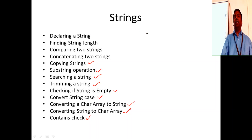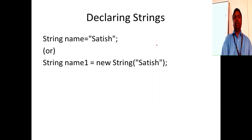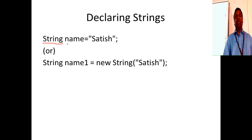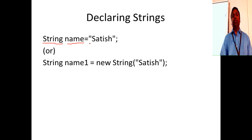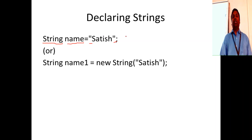A string is a sequence of characters put together in double quotes in Java. We'll see how to use all the methods to handle strings. The straightforward way to declare a string is to use the String class - capital S - give a variable name, and then provide your value in double quotes. This is called a string literal.